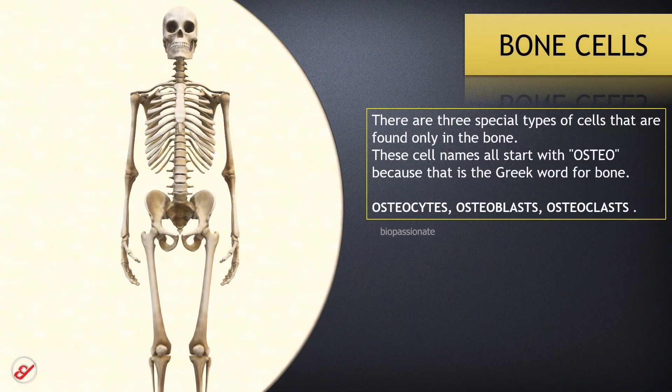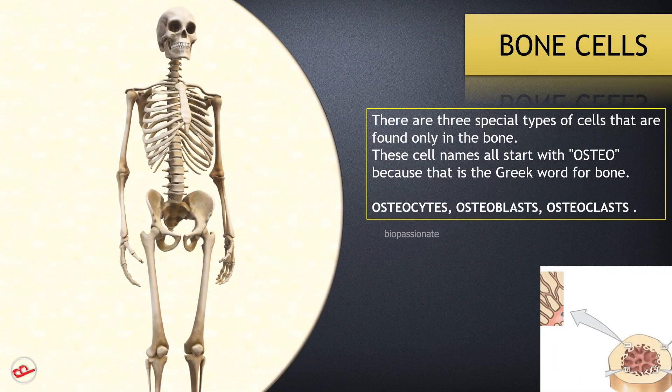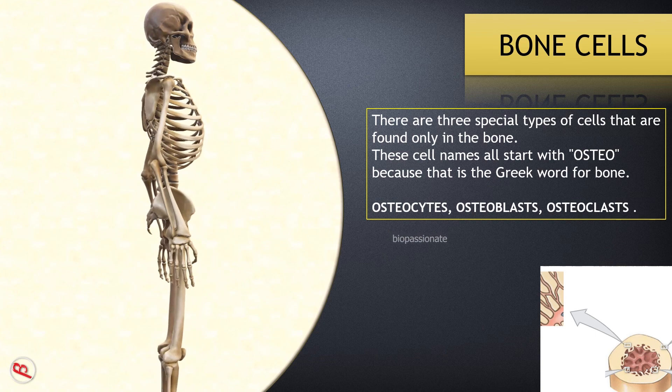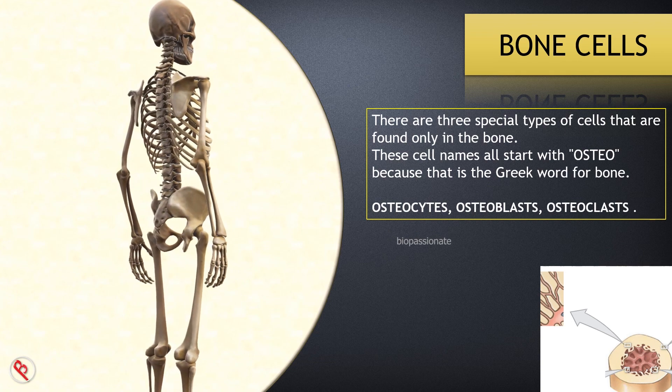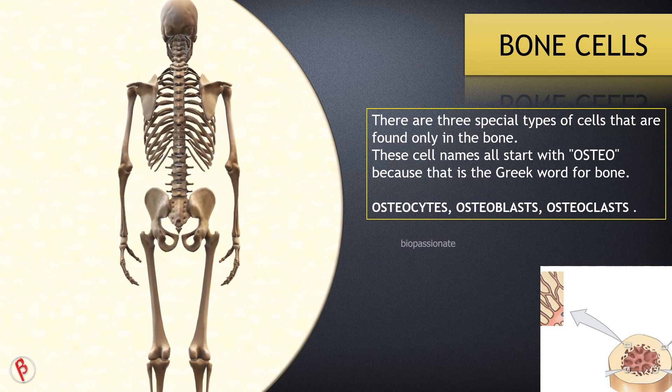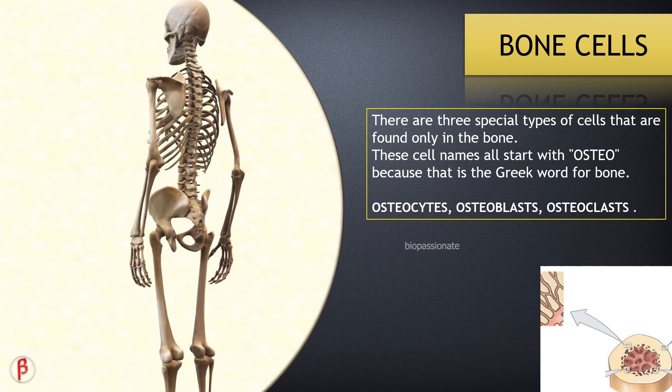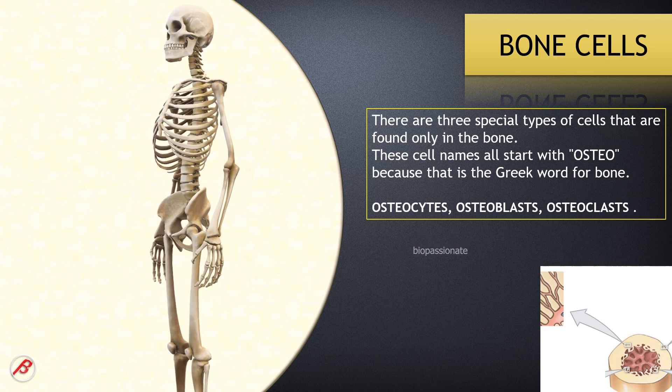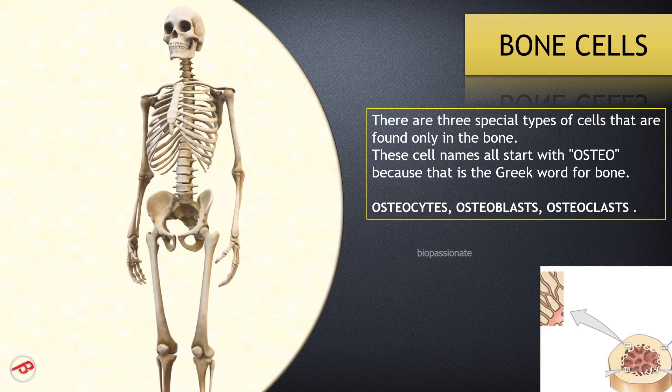Bone cells form bone tissue having a dense matrix. There are three special types of cells that are found only in the bone: osteocytes, osteoblasts, and osteoclasts.